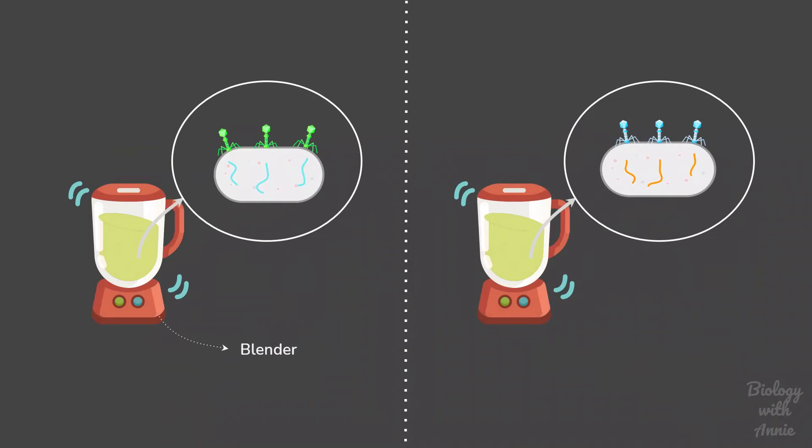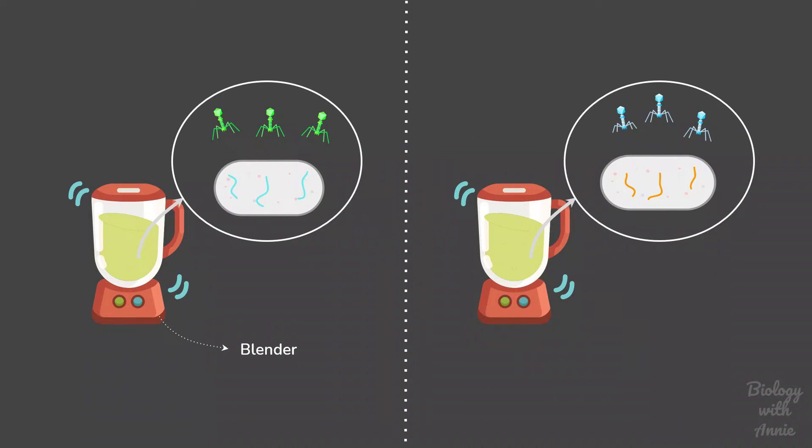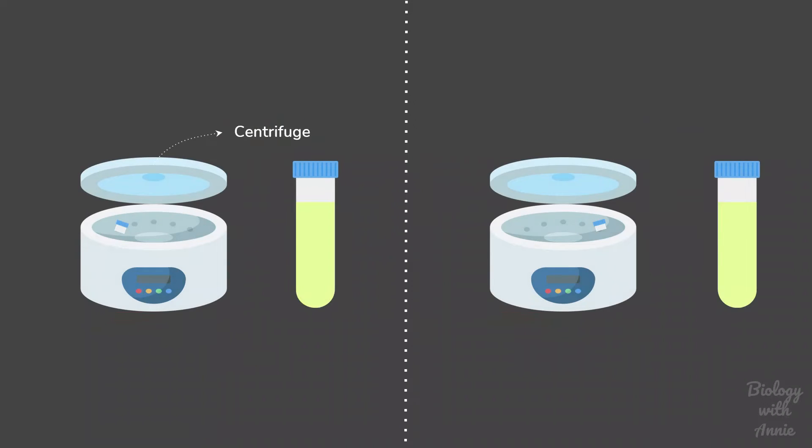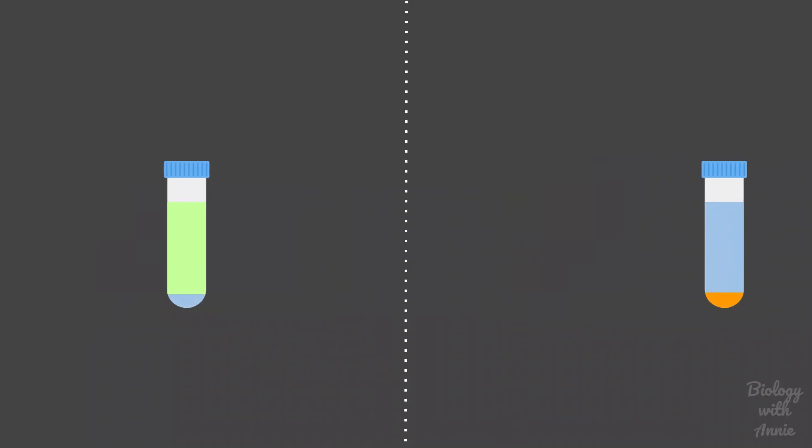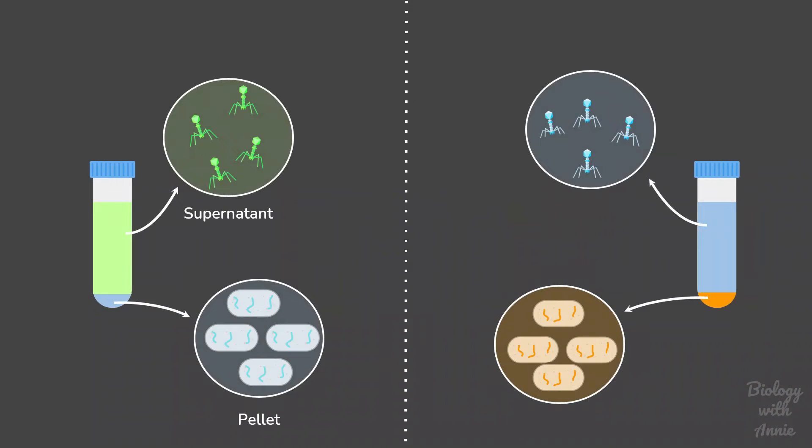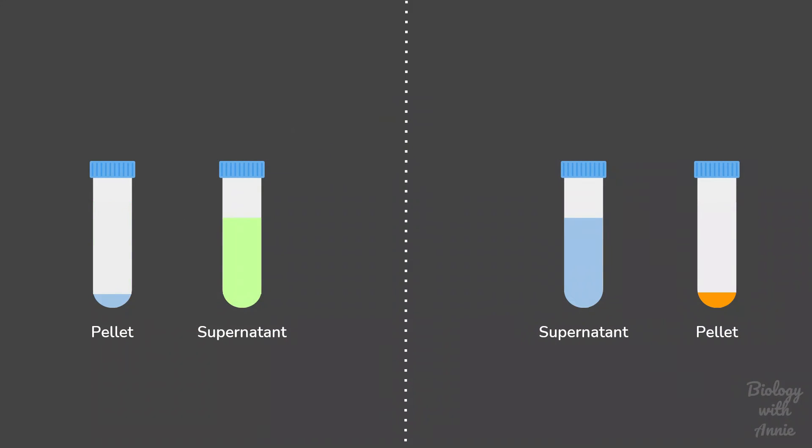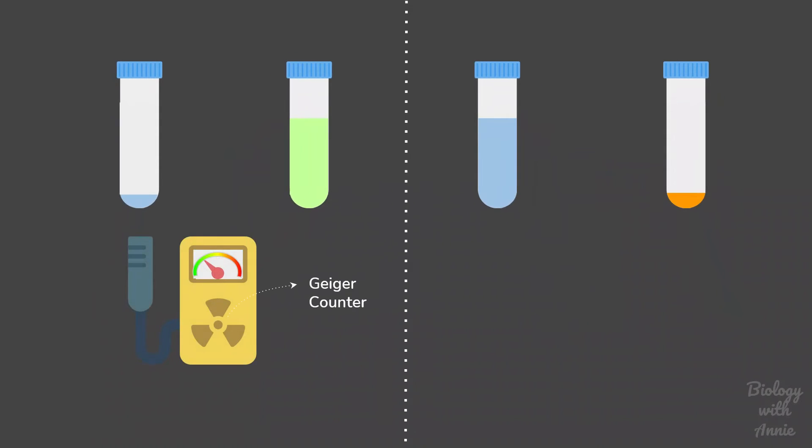The phage ghost and the bacteria present in the media were separated via centrifugation as they are of different density. The larger bacterial cells moved down the centrifuge tube and clumped together to form a pellet, whereas the lighter phage ghost remained in the supernatant. Finally, the supernatant and pellet were tested for the presence of radioactive substances using a device known as the Geiger counter. This device can detect and measure the ionizing radiations emitted from the radioactive isotopes.